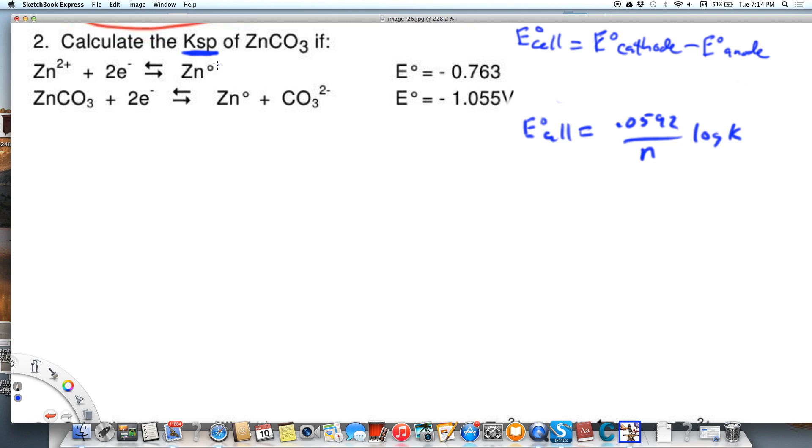So let's first find the E-naught of the cell. We need it to be positive of course. So this is going to be minus 0.763 volts minus a minus 1.055 volts, and so that's going to equal 0.292 volts for our cell.